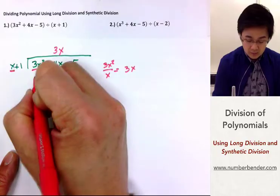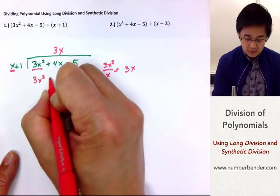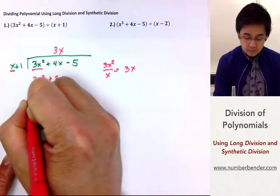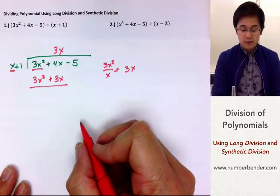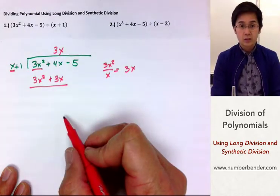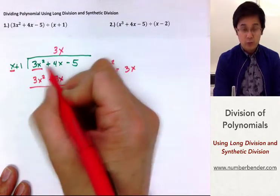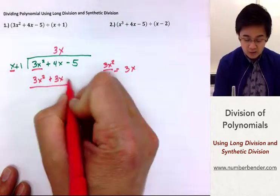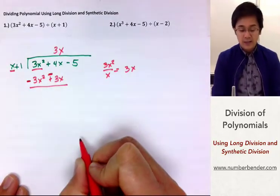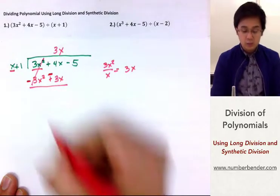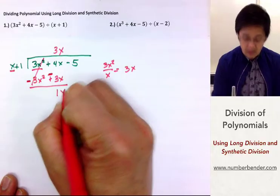So, 3x times x is 3x squared, and 3x times 1 is 3x. Just like long division, after multiplying out to the divisor, we're going to subtract our answer from the original polynomial. We will change the sign since we are subtracting — this becomes negative and this also becomes negative. In the process, we'll be able to cancel out 3x squared, leaving us with 1x.